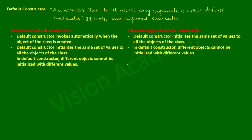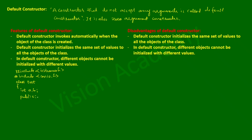Now let us take an example. I'm going to write hash include with the iostream.h header file, and then hash include with the conio.h header file. Then I'm going to write a class — for example, class test — with an open brace. In the private section of the class I'm going to declare two variables: int a, b.